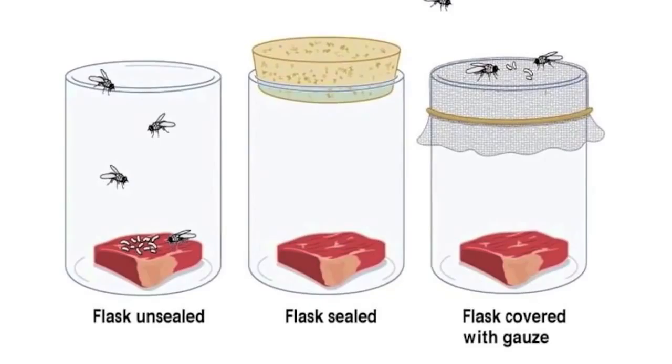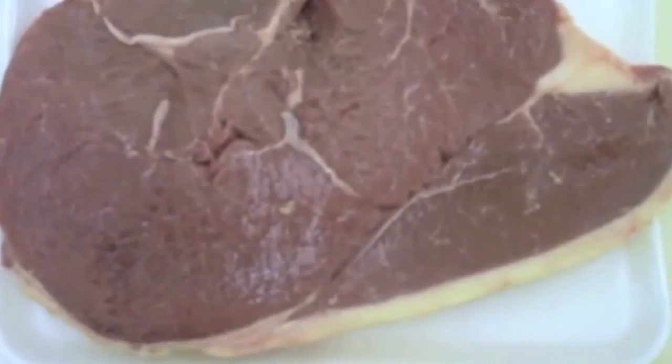The maggots on meat were also taken as evidence that life could generate from non-living matter. But later it was understood that such maggots did not form spontaneously, but that they emerged from microscopic larvae deposited on the meat by flies.